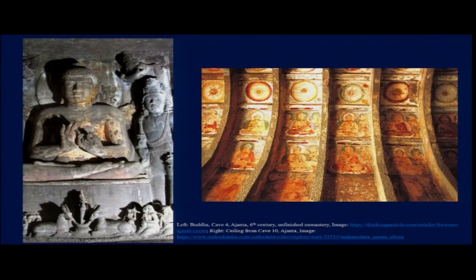The image on the left side of the screen is from cave 4, one of the largest caves in Ajanta, and it is also an unfinished monastery. In this one, the rock structures have been carved, not only into columns, pillars, and ceilings, but intricate details were also added. Cave 4 is not the only one where this was done — there are many other caves with similar kinds of activities.